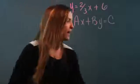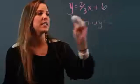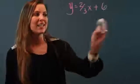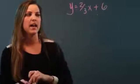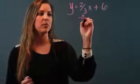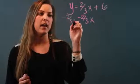I'm going to do that by subtracting two-thirds x from both sides because I don't want it over here anymore. So minus two-thirds x and minus two-thirds x.